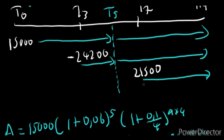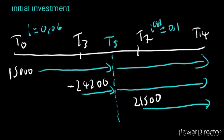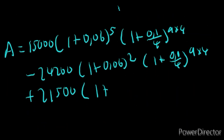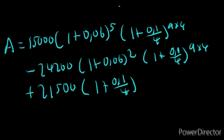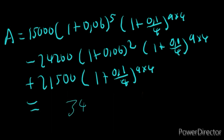Now for the $21,500 deposit: plus 21,500. Notice this arrow has no interruption from T7 to T14 — that is 7 years, entirely within the 10% per annum compounded quarterly period. So we write (1 + 0.1/4)^(7×4). There is no other bracket. Type this entire expression in the calculator to get your answer. The unit is rands.